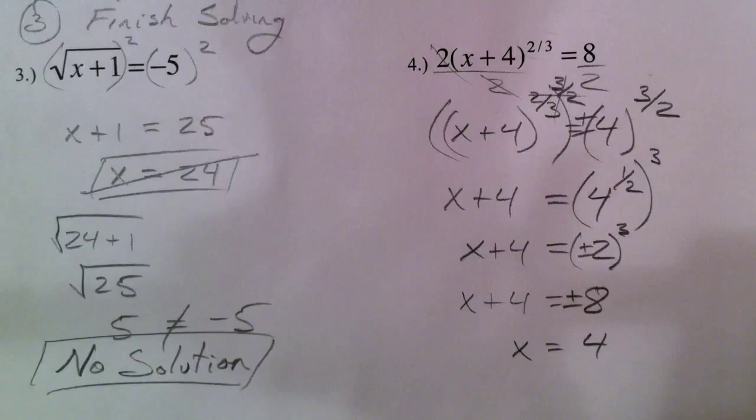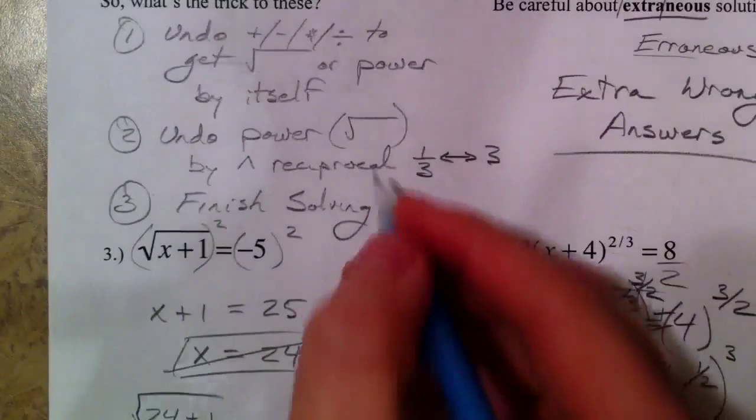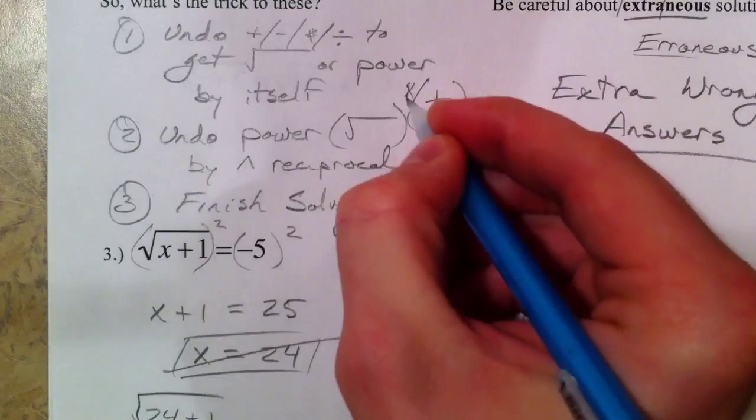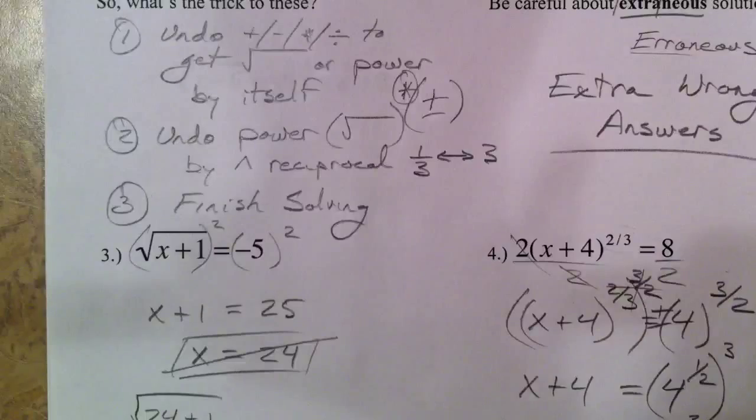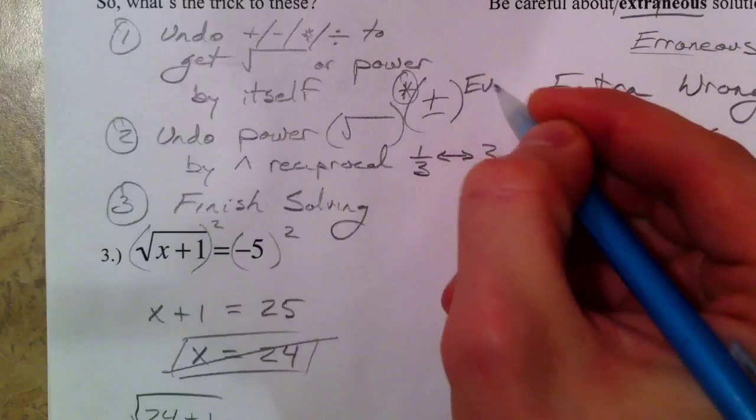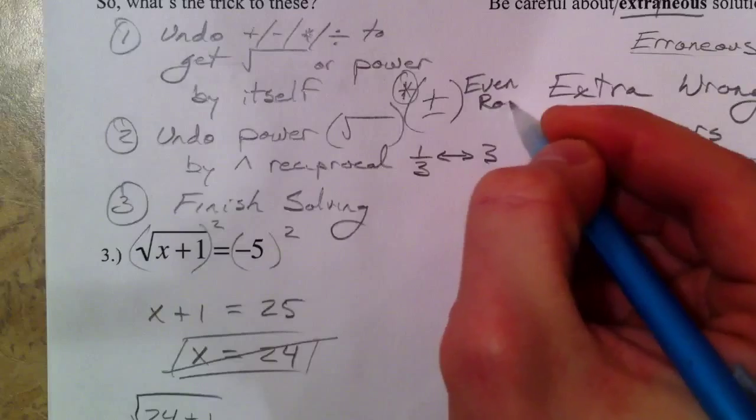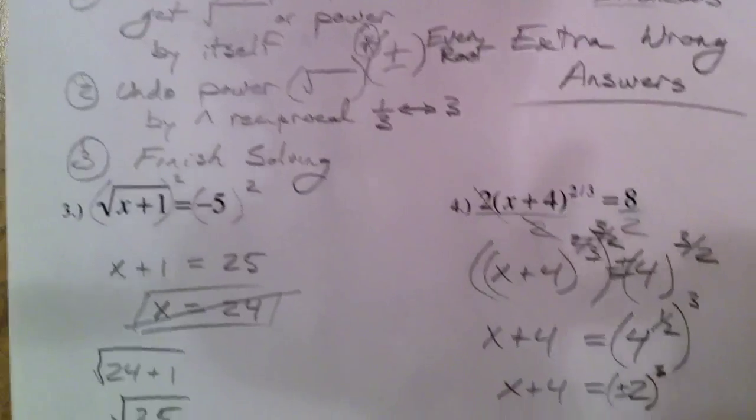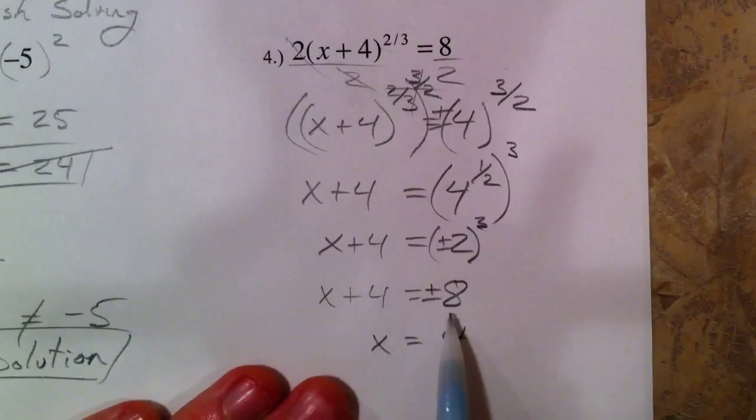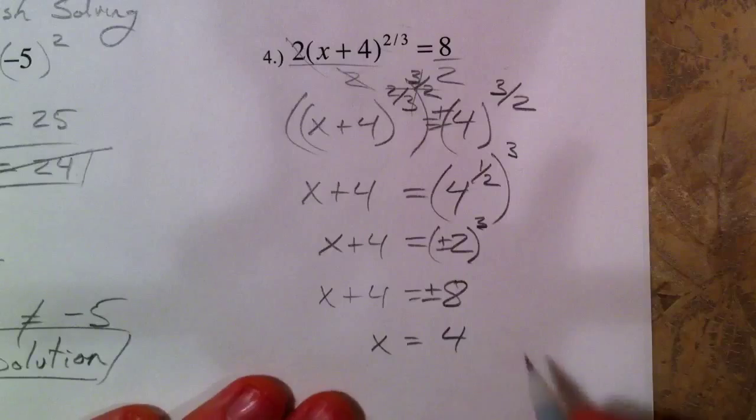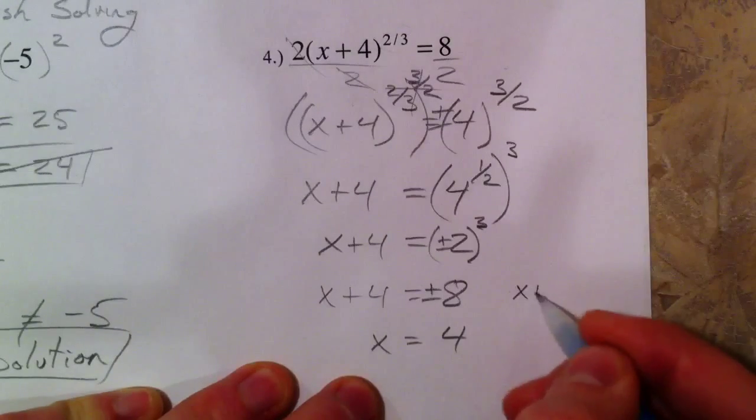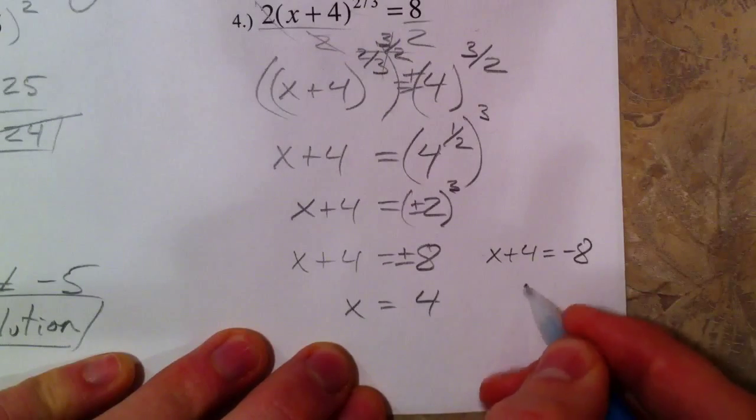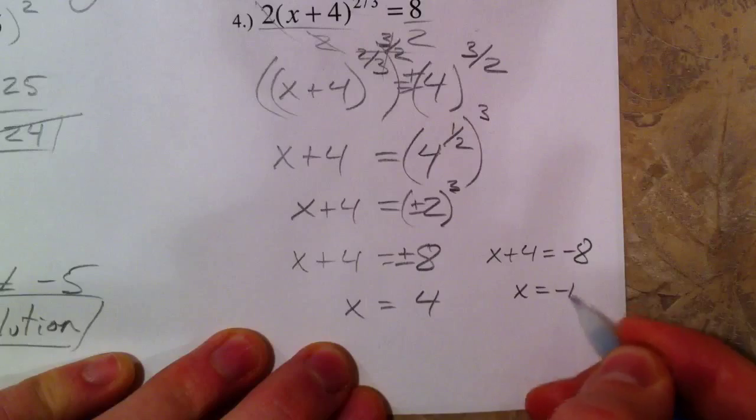Again, any time you take an even root. And so, you might want to make a note, plus or minus, make a little asterisk here for yourself. Do I need the plus or minus any time you take the even root? Square root, fourth root, one-fourth power, one-sixth power, anything like that. And so, we get plus or minus 8. And so, we got 4, but then x plus 4 was also equal to negative 8. And so, subtract the 4, x equals negative 12.